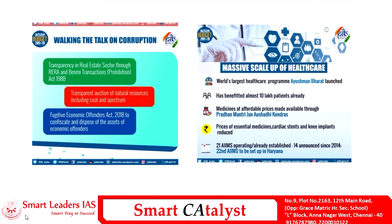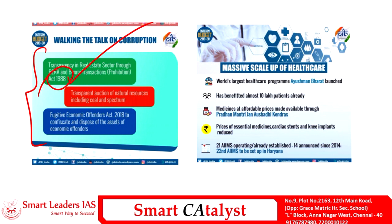To curtail corruption, the government has implemented three important schemes. To bring transparency in real estate transactions, the government has implemented the Real Estate Regulation and Development Act (RERA). It has also brought significant amendments to the Benami Transaction Act of 1988. And to bring back fugitive economic offenders who have fled the country, the government implemented the Fugitive Economic Offenders Act in 2018, which paves the way to confiscate and dispose of assets of economic offenders.